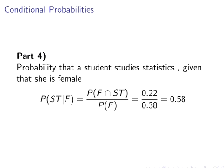So we'll get to the last one here. The probability that a student studies statistics given that she is female. So the probability of ST and F, so that's a student, a female and studying statistics, that's the same as we had before, F and ST, that's 0.22. We have the probability of F is 0.38. And so 0.22 divided by 0.38, and we get an answer of 0.58.